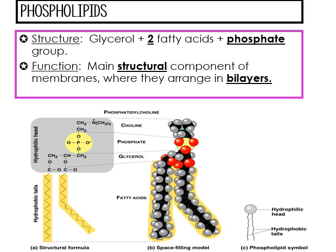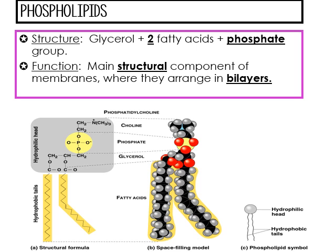Now we're going to discuss phospholipids. The structure of a phospholipid is glycerol plus two fatty acids plus a phosphate group. Their function is structural — they are the main component of membranes and they're arranged in bilayers. The fatty acid tails are hydrophobic, and the PO4 head is hydrophilic. Hydrophilic means water loving; hydrophobic is water fearing.